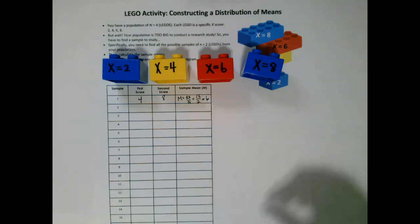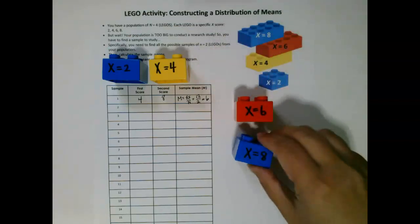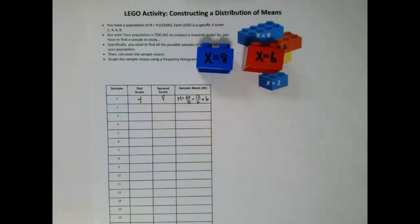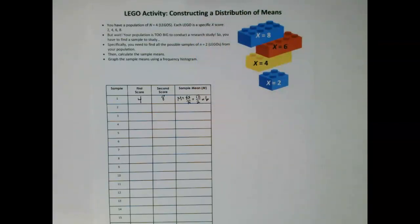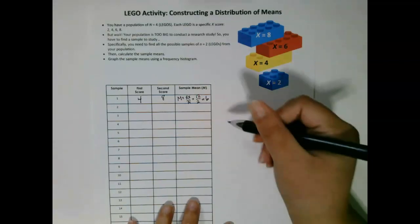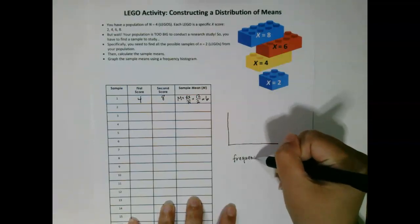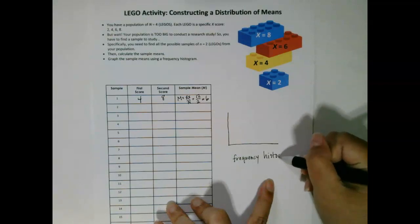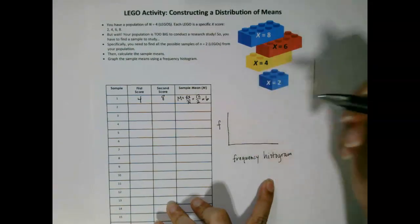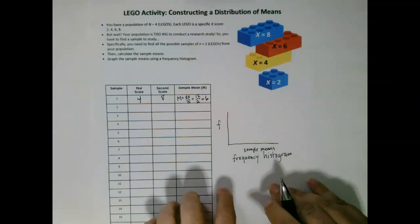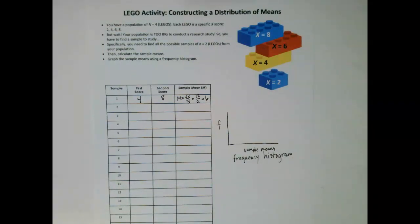Now you're going to complete the full table using every possible combination of your sample of 2. So when you complete the table on your handout based on the data, you'll have 16 sample means. When you're done calculating the sample means, you will need to graph them. In other words, you need to graph them using a frequency histogram, where the F is over here, and your sample means are over here. And let's see what happens when this Lego activity is done.